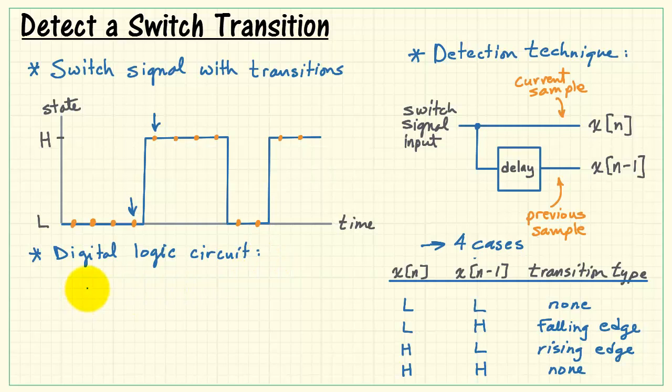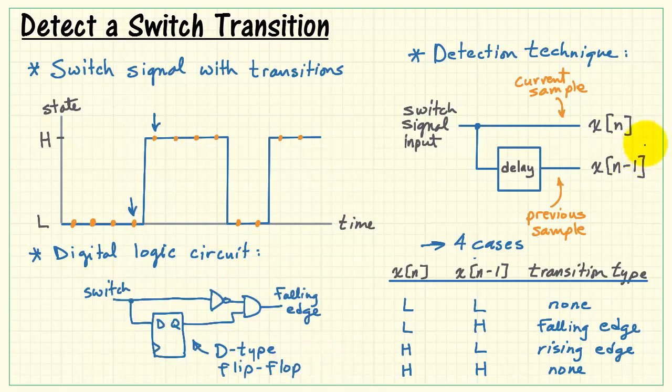Now if we were setting this up in standard digital logic, it would look like this. We would take our switch signal. It's actually very similar to the flow diagram that I illustrated here. Pass that through the delay element, and that would be a D-type flip-flop. Incidentally, D stands for delay, typically.